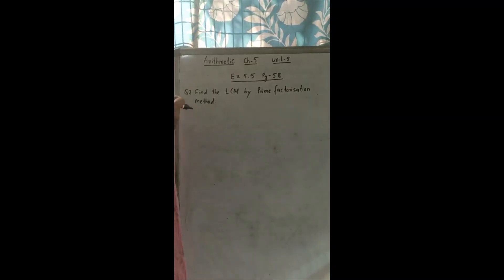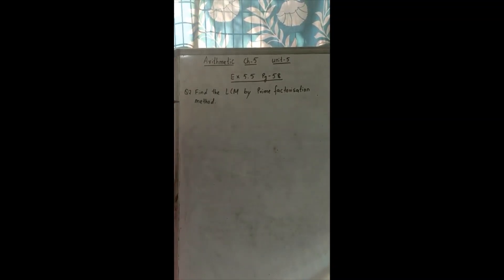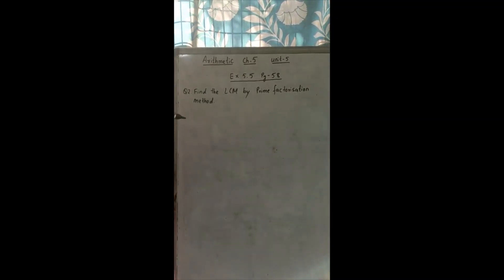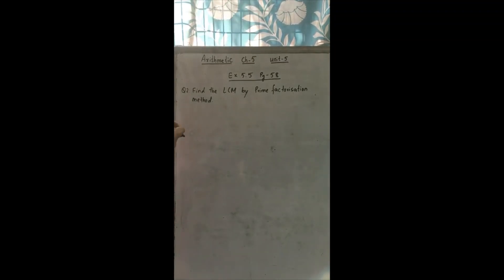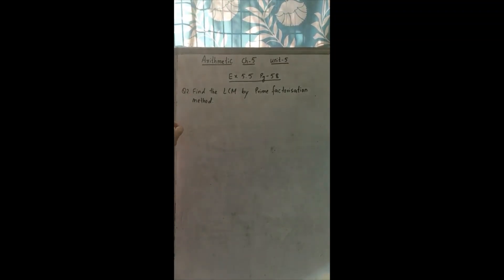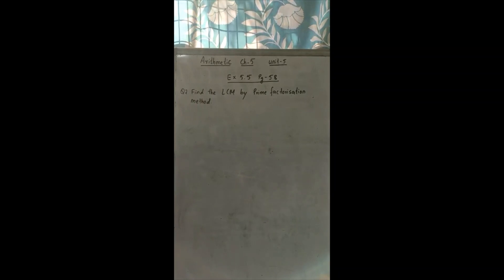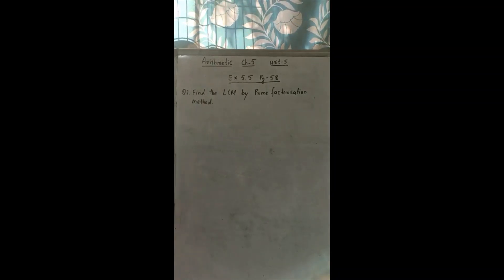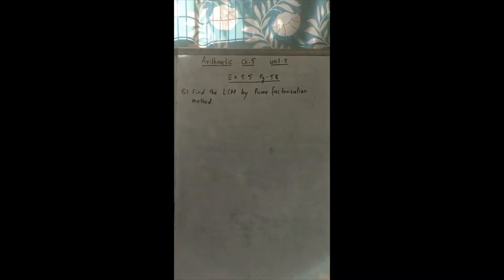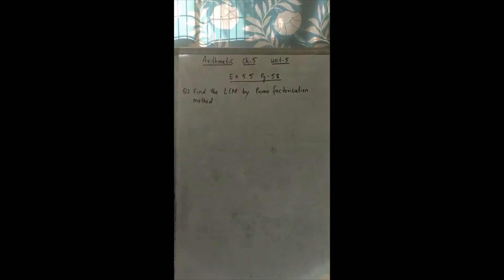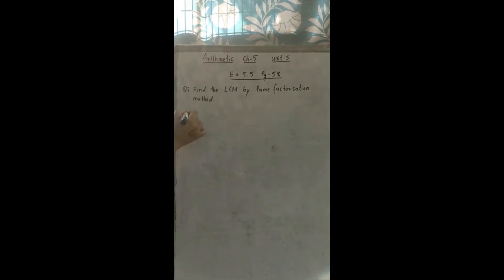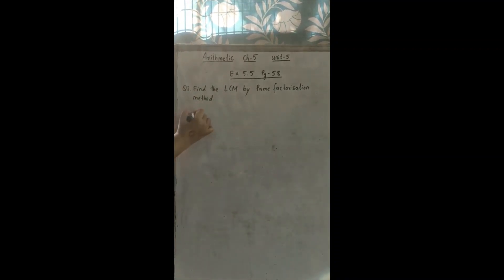Now that you know how to find LCM by prime factorization method and division method, we will solve exercise 5.1. All of you turn your book to page 58 and read question number 2. Find LCM by prime factorization method. We will solve D.